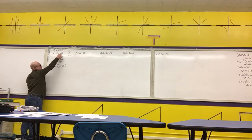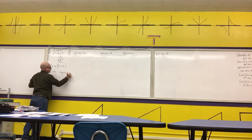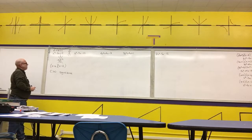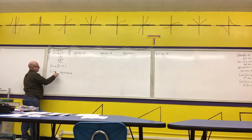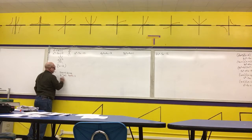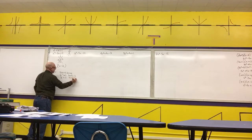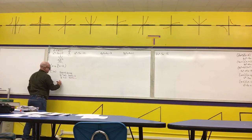One thing to look at: if c is greater than 0, meaning it's positive, we know the signs in the factors are going to be the same. If the signs are the same and b is greater than 0, then both signs are positive. If b is less than 0, then both signs are negative. If c is negative, we know the signs are different.